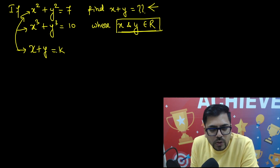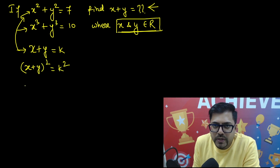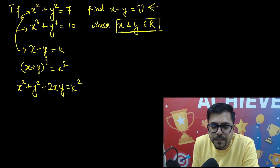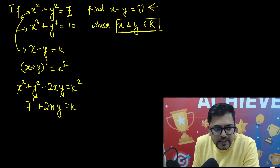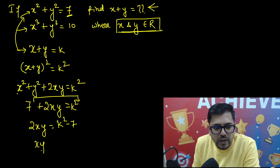So let's do squaring both sides. We have x plus y whole squared equals k squared. Now x plus y whole square is x squared plus y squared plus 2xy equals k squared. Since x squared plus y squared is given as 7, we get 7 plus 2xy equals k squared. So 2xy equals k squared minus 7, which gives us xy equals k squared minus 7 divided by 2.